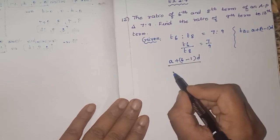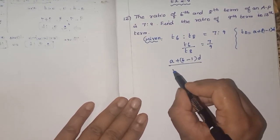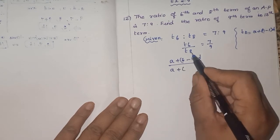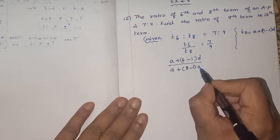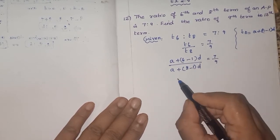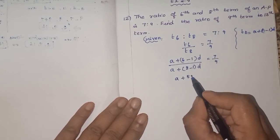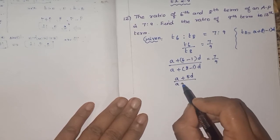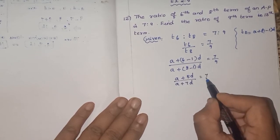Divided by T8 which is A as it is, and D as it is. A plus, what is our Nth? 8, 8 minus 1 into D, is equal to 7 by 9. So 6 minus 1 is 5. So A plus 5D by A plus 7D is equal to 7 by 9.